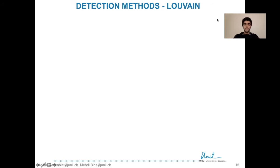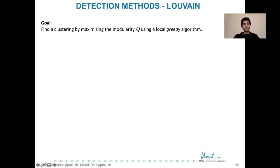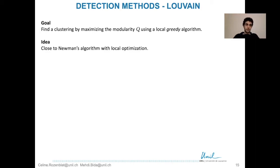Another community detection method is the Louvain algorithm. Its goal is also to find a clustering by maximizing the modularity, this time using a local greedy algorithm. The idea is close to Neumann's algorithm but with local optimization and a supplementary step that helps to improve the results.